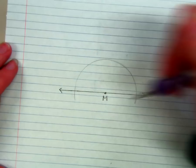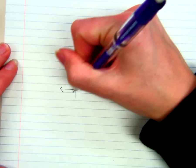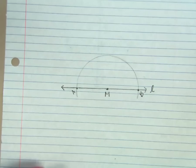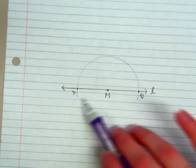And now I have two new points, A and B. And basically what I've done now is I've created a segment with a midpoint M.